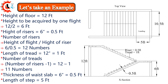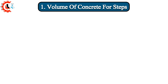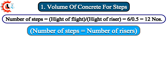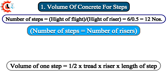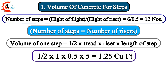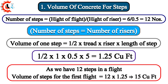Length of step = 5 feet. 1. Volume of concrete for steps. Number of steps = height of flight ÷ height of riser = 6 ÷ 0.5 = 12 numbers. Number of steps equals number of risers. Volume of one step = ½ × tread × riser × length of step = ½ × 1 × 0.5 × 5 = 1.25 cubic feet. As we have 12 steps in a flight, volume of steps for the first flight = 12 × 1.25 = 15 cubic feet.